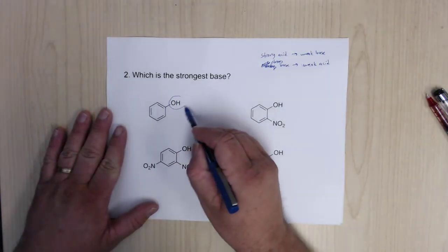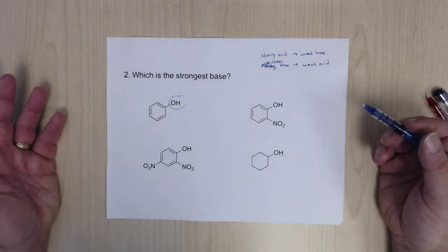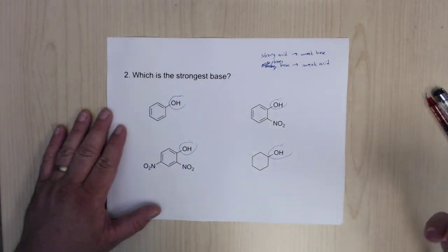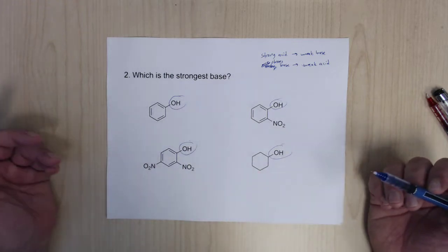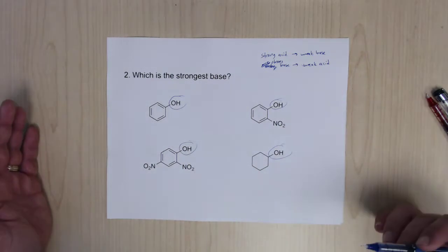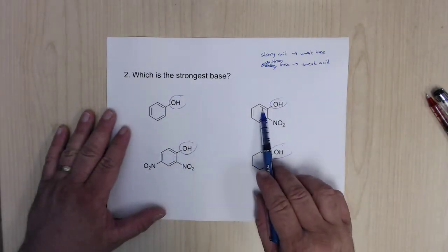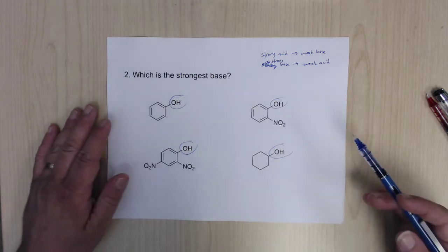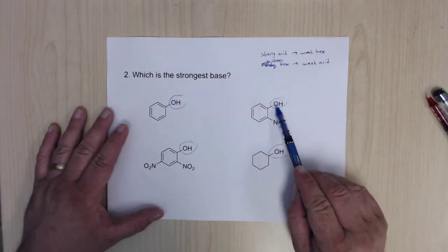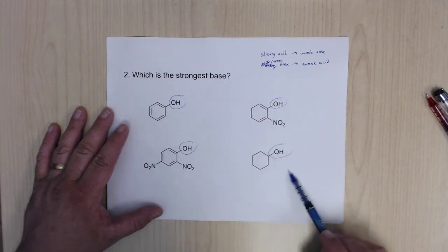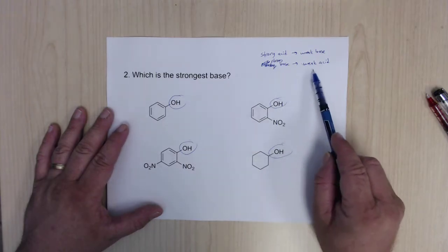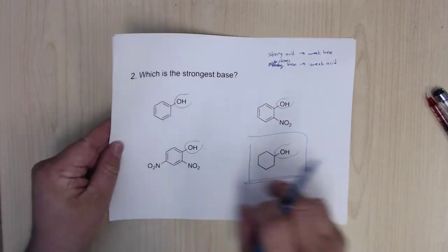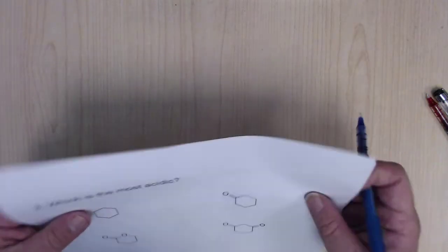A good rule of thumb: if the hydrogen is not on a carbon, it's probably the most acidic. So we identify the most acidic hydrogen on each molecule — here, here, here, and here — they're all on oxygen, so that's a tie. The next step is adjacent pi bonds. Phenols are much more acidic because they have a pi bond immediately adjacent to the acidic hydrogen. This one does not have that, so this is the weakest acid of the bunch and therefore the strongest base.